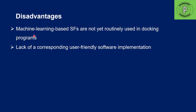The disadvantage of RF score is that, because it is a machine learning-based scoring function, it is not routinely used in docking programs. The popular docking software currently in regular use do not use machine learning-based methods — they depend on knowledge-based, force field-based, or physics-based methods. Due to this lack of user-friendly software implementation, only the developers have implemented it in their own docking app, which is privately available.